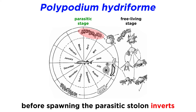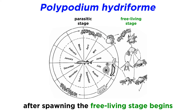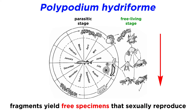Finally, right before the host fish spawns, the parasitic stolon inside the infected egg turns inside out, and just after spawning begins its free-living, non-parasitic life stage. The long stolon asexually splits into numerous fragments, yielding free specimens that walk on the substrate using their tentacles, and forms sexually reproductive gonads to infect new hosts.